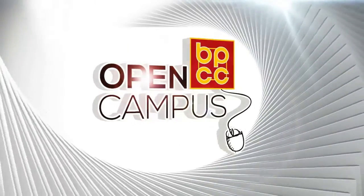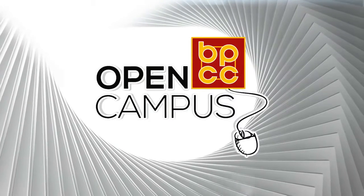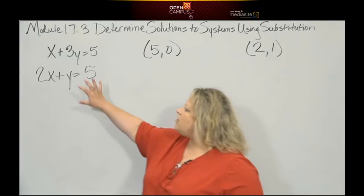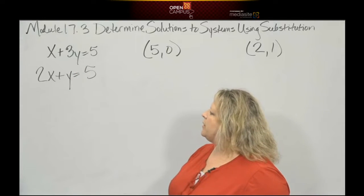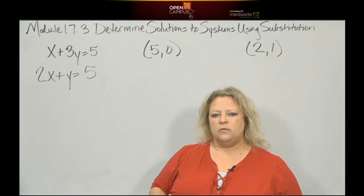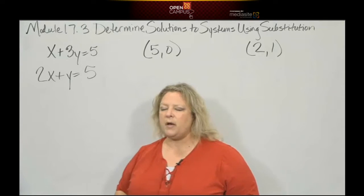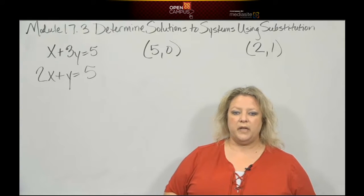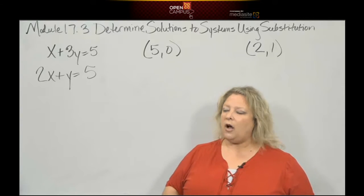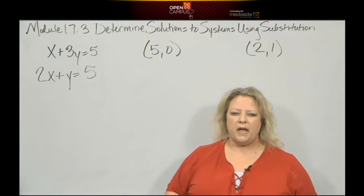Here is our system: x plus 3y equals 5 and 2x plus y equals 5. What's awesome about this is you don't have to worry about putting it in y equals mx plus b—we're not graphing. I'm just substituting and evaluating. It's the easier format.